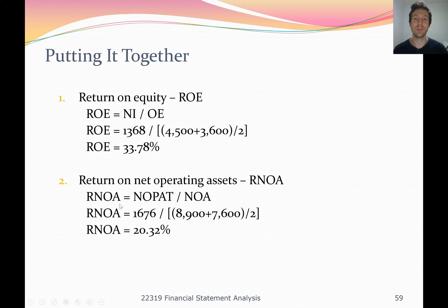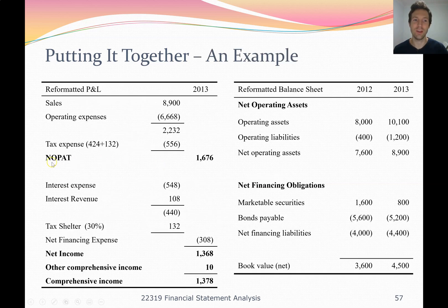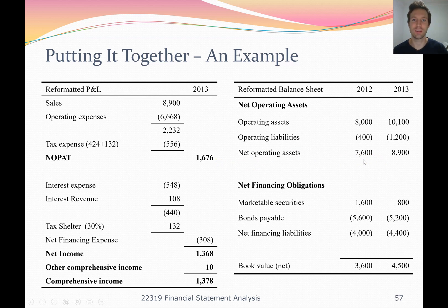RNOA is similar to a normal return on assets calculation, except we're using the reformatted financial statements. We take net operating profit after tax, NOPAT, and divide through by our average net operating assets. Current year's net operating assets plus previous year's net operating assets, divided by two, gives average NOA. NOPAT over NOA is our return on net operating assets.